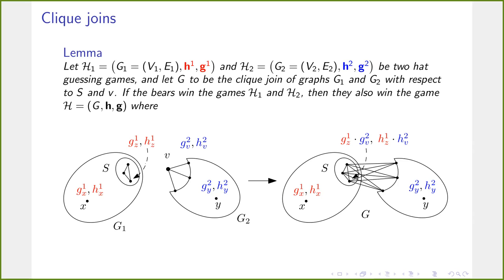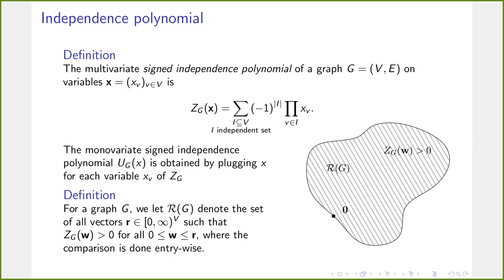We now get to the second part of the title: the independence polynomial. We are interested in the signed independence polynomial of a graph G on a vector of variables X_v, one per vertex. It is defined as the sum over all independent sets I of (−1)^{|I|} times the product of variables corresponding to vertices in I. The univariate version UG(x) is obtained by substituting the same variable x for each X_v.